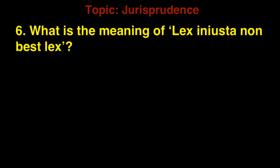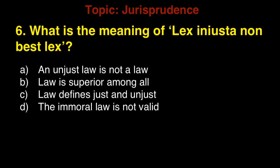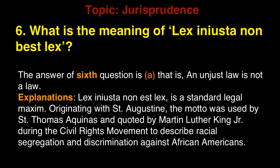Question 6: What is the meaning of 'lex iniusta non est lex'? A. An unjust law is not a law, B. Law is superior among all, C. Law defines just and unjust, D. The immoral law is not valid. The answer is A — an unjust law is not a law. Explanation: Lex iniusta non est lex is a standard legal maxim. Originating with St. Augustine, it was used by St. Thomas Aquinas and quoted by Martin Luther King Jr. during the civil rights movement to describe racial segregation and discrimination against African Americans.